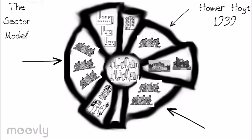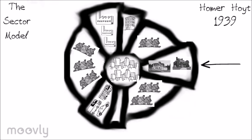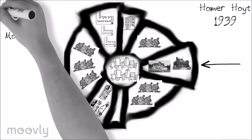The middle-class residential section surrounds the other sectors but is further away from the transportation zone, making it more desirable. It is the largest residential area and still has access to transportation lines for people who work in the CBD. The high-class residential is the outermost edge, furthest away from the industry zone, contains the best housing, and has the least traffic.